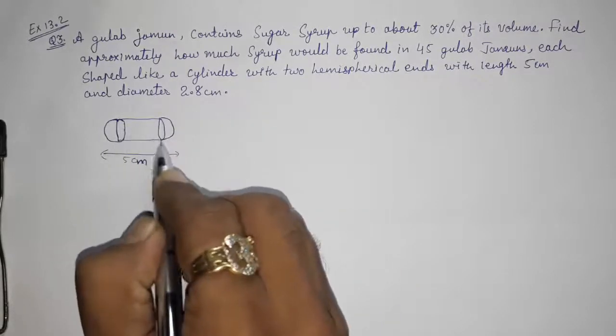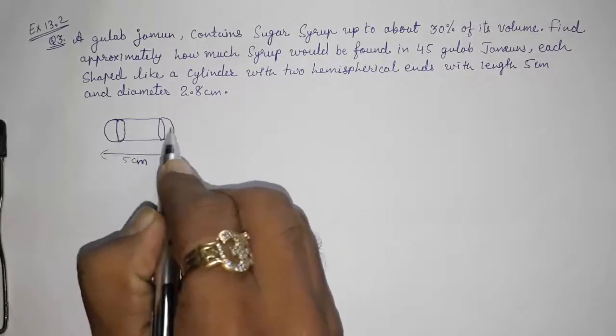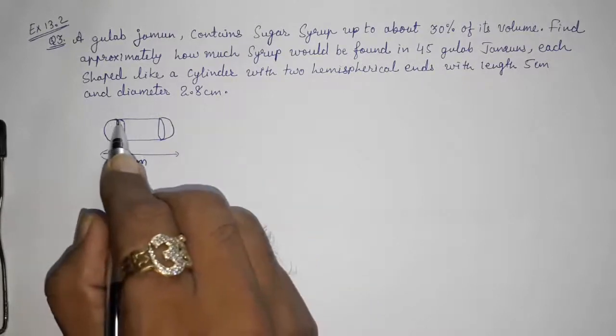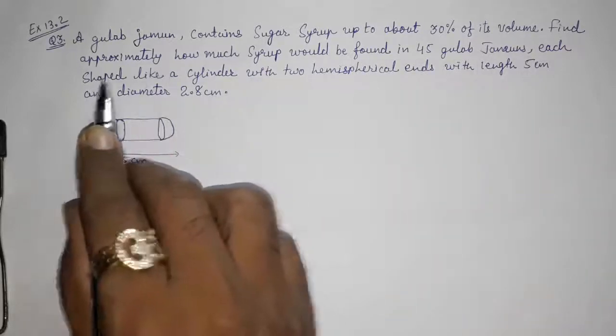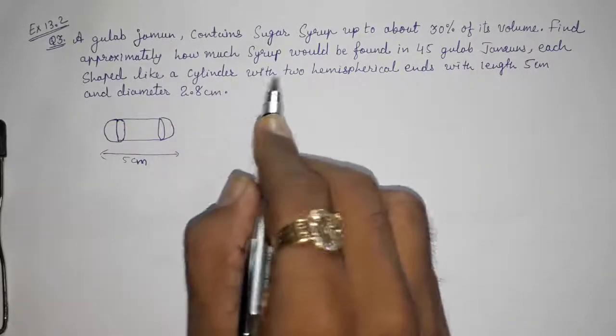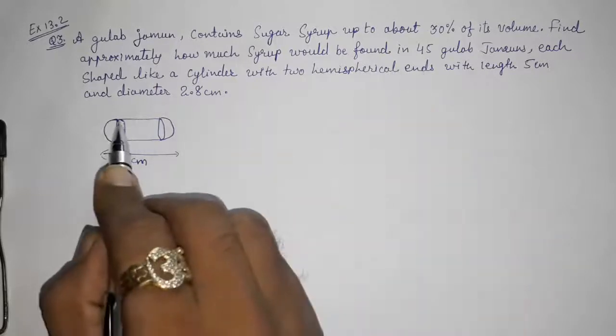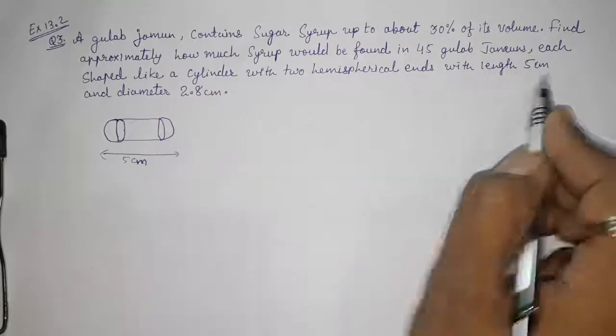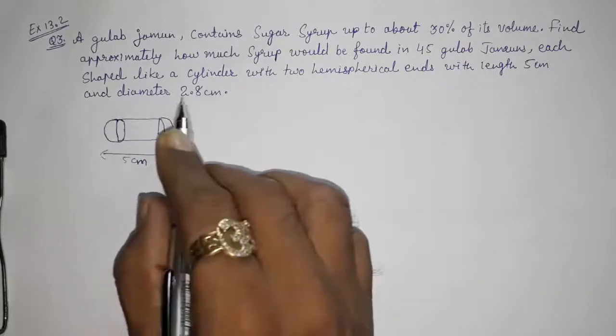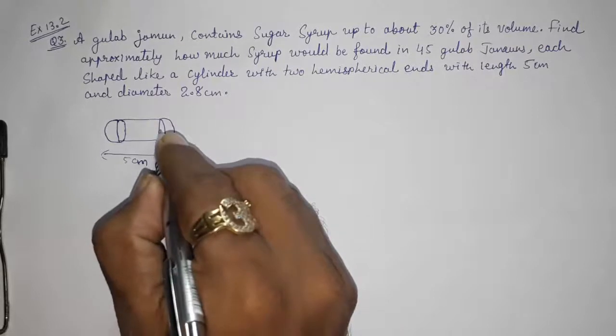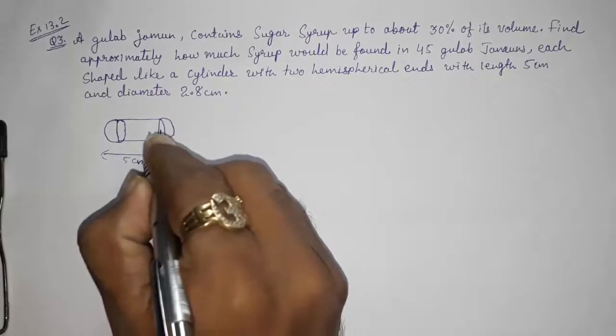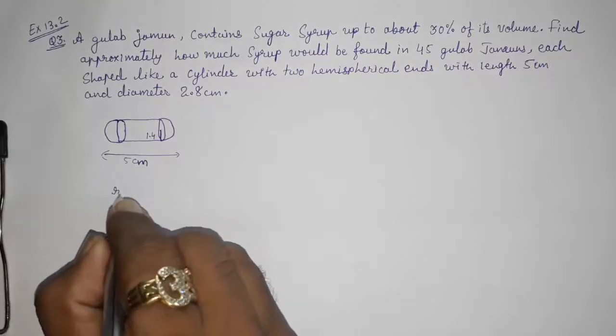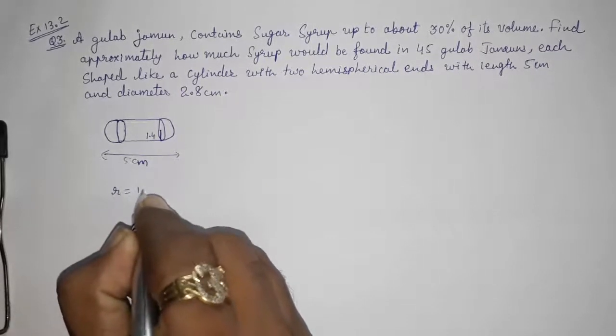Here we are having a cylinder and two hemispheres for making one gulab jamun. You can easily see they told us that each is shaped like a cylinder with two hemispherical ends. The length is 5 cm and the diameter is 2.8 cm, so the radius will be 1.4 cm. I am writing here the radius, it is 1.4 cm.